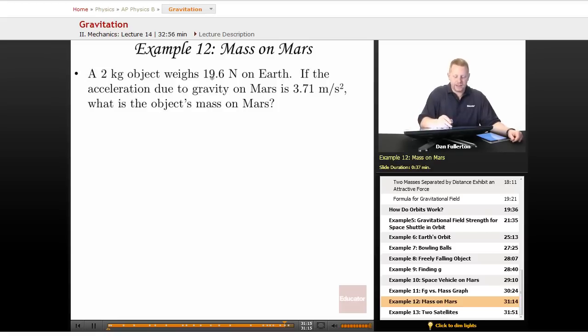Let's go back to Mars. A two-kilogram object weighs 19.6 Newtons on Earth. If the acceleration due to gravity on Mars is 3.71 meters per second squared, what is the object's mass on Mars?